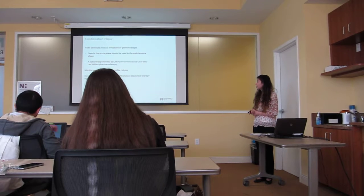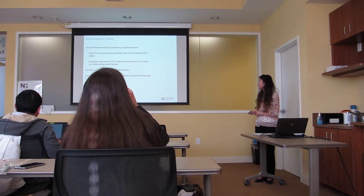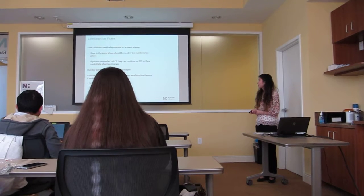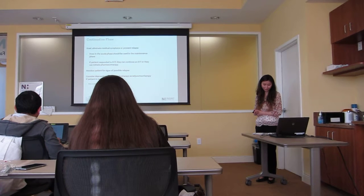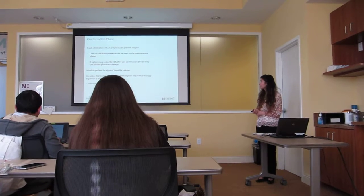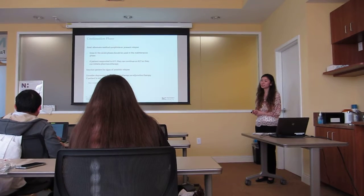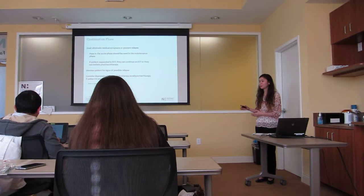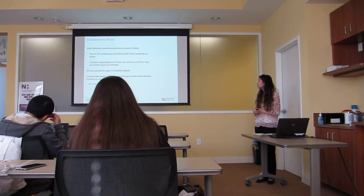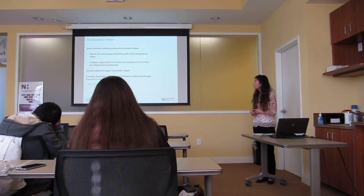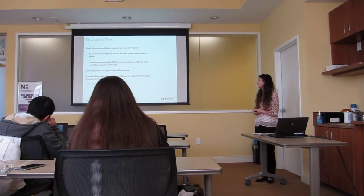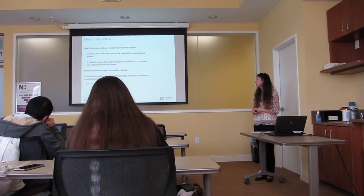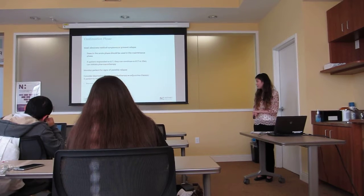For the continuation phase, the goal is to eliminate residual symptoms and prevent relapse. The dose used in the acute phase should be continued, and treatment should continue for about four to nine months. If a patient responded to ECT, they can continue on it or be initiated on pharmacotherapy. Monitor patients for signs of possible relapse, and consider depression-focused psychotherapy as an adjunctive therapy if the patient is not already on it — the best evidence is for CBT.